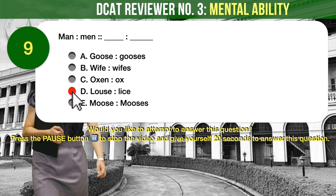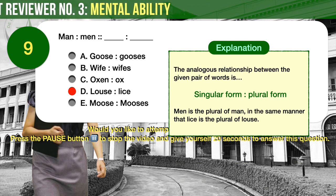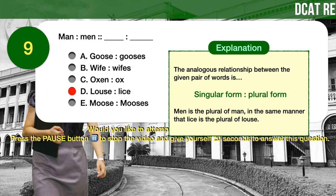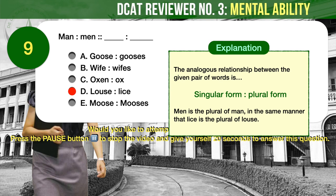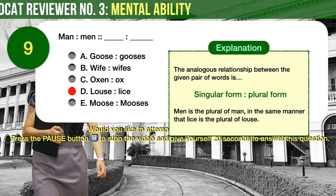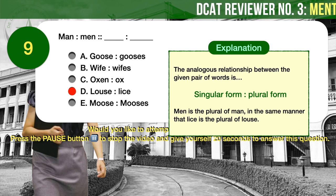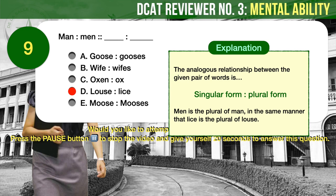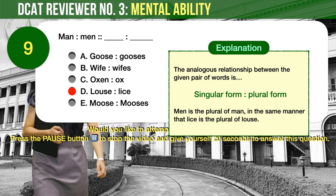The correct answer is D, louse is to lice. The analogous relationship is singular form to plural form — men is the plural of man, just as lice is the plural of louse. The plural of goose is geese (not gooses); oxen is the plural of ox but their positions are swapped in option C. As for moose, the only correct plural is also moose — adding an S is incorrect. Moose derives from Algonquian, a Native American language, and kept its original plural ending rather than adopting the normal English S ending.